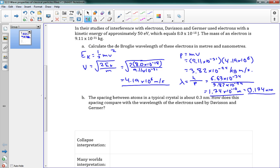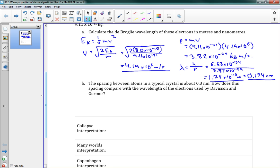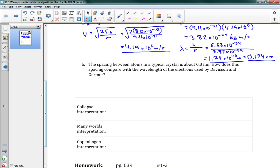So, that's how we find the de Broglie wavelength of a particle. We just need to find the momentum first, which sometimes means finding the speed before we can do that. Here it says, the spacing between atoms in a typical crystal is about 0.3 nanometers. How does this spacing compare with the wavelength of the electrons used by Davison and Germer?